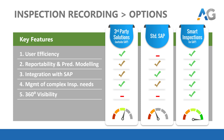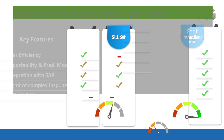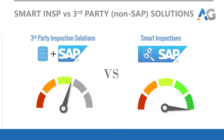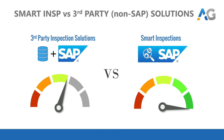With that background, let's check the top two scorers — that is third-party products and Smart Inspection — in a bit more detail. Smart Inspections clearly outshines third-party products. Let's delve into a bit more detail and understand the science behind it.